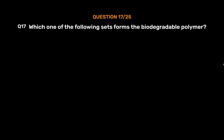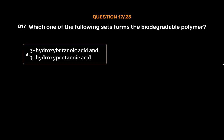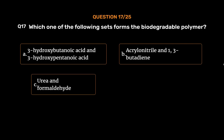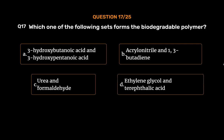Question number 17. Which one of the following sets forms a biodegradable polymer? Option A, 3-hydroxybutanoic acid and 3-hydroxypentanoic acid; Option B, acrylonitrile and 1,3-butadiene; Option C, urea and formaldehyde; Option D, ethylene glycol and terephthalic acid. The correct answer is Option A: 3-hydroxybutanoic acid and 3-hydroxypentanoic acid.